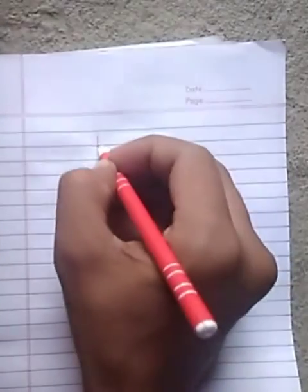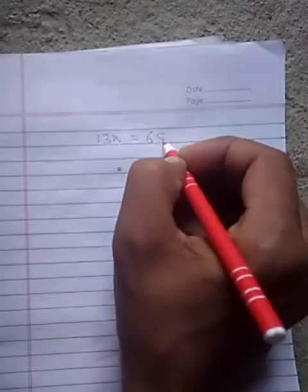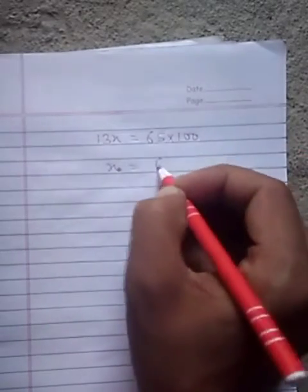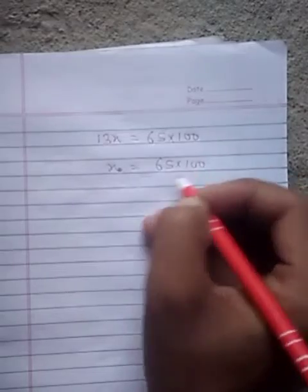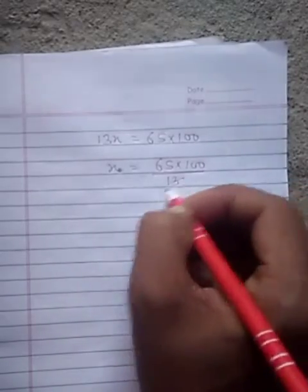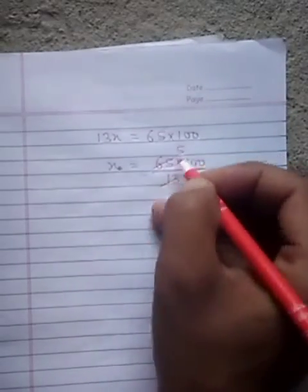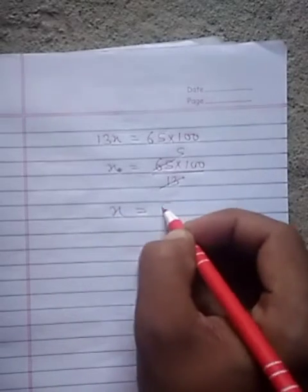13 multiplied by X, we get 13X upon 100 is equal to 65. Clear? 13X is equal to 65 into 100. And X is equal to 65 into 100 upon 13. 5 just 65. So X is equal to student 500. This is our answer.